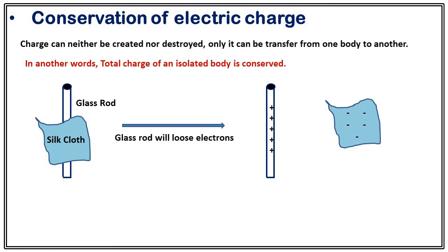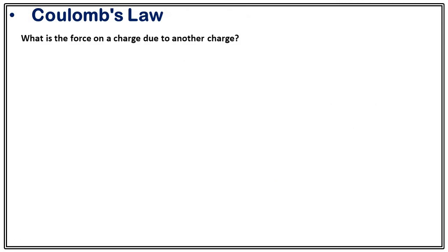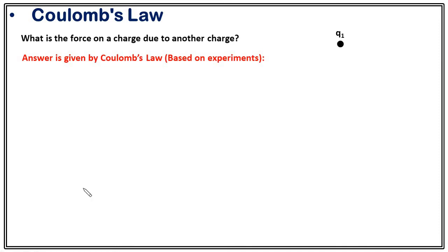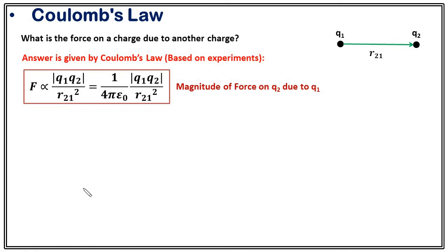We will now approach the basic question of electrostatics: what is the force on a charge due to another charge? The answer is given by Coulomb's law, which is based on experiment — so you cannot derive it, you can only verify it. Suppose we want to calculate the force exerted by charge q1 on another charge q2 separated by a distance r21. According to Coulomb's law, the magnitude of the force is proportional to q1 times q2 divided by the distance squared. Removing the proportionality, we introduce the constant 1 over 4πε₀.